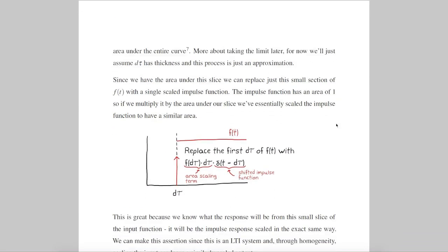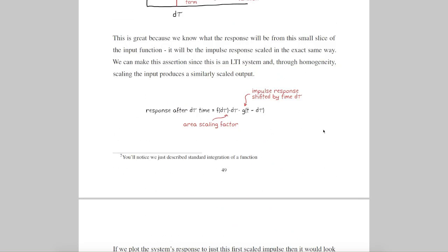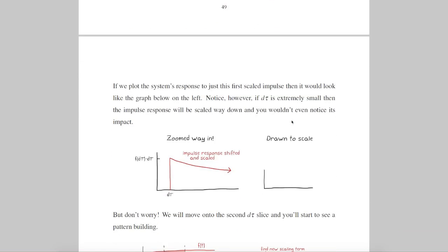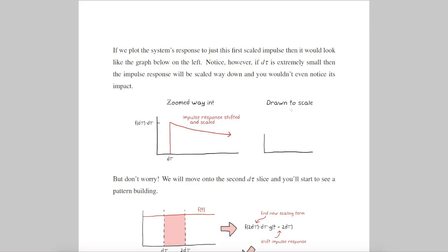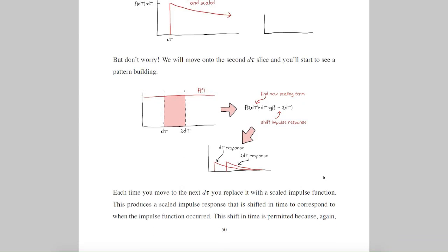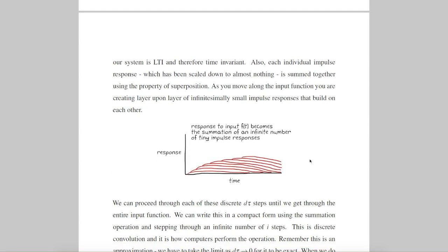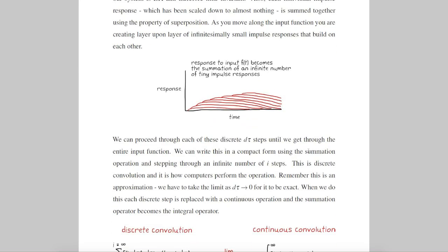We can then replace that area with an impulse function that we scaled to have the same area. Essentially, we remove the first bit of f(t) and replace it with an impulse that represents it. Now we know what the response will be for that first d-tau — it will just be the scaled impulse response. And if we zoom in, it'll look like an impulse response, but since d-tau is so incredibly small, the actual response is near nothing. But if we move on to the next d-tau and perform the same replacement, then we'll get two really tiny impulse responses. Since this system is modeled as LTI, we can sum those two responses together. And if we keep this up for the entire function, we'll be left with a bunch of really tiny impulse responses for each d-tau that we can sum together to get the total response of the system. This is discrete convolution, and it's how computers solve the problem.